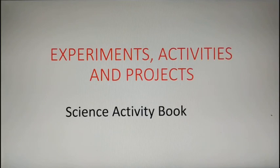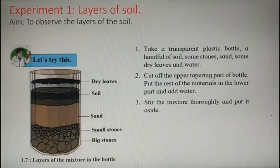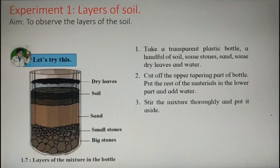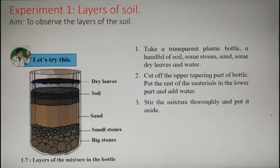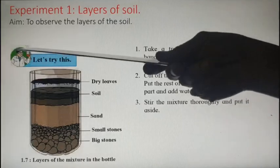Let us start now. Experiment number one is from the first chapter: Natural Resources - Air, Water and Land. This first experiment is about layers of soil. The aim of the experiment is to observe the layers of the soil. This experiment is also given in the textbook under the title 'Let's Try This.'